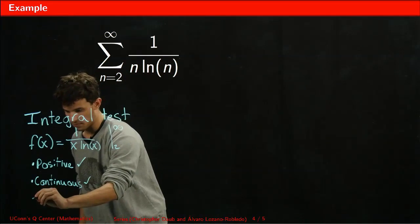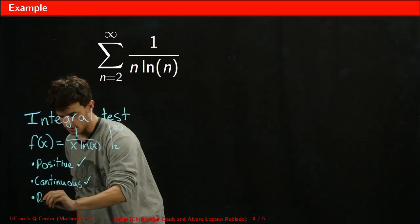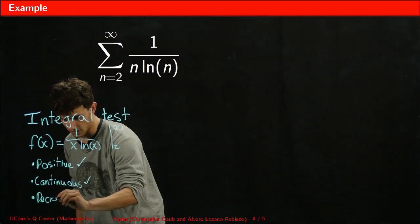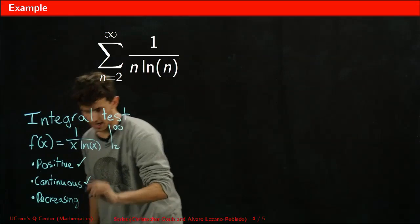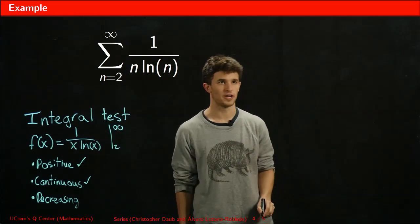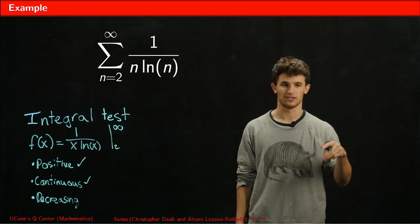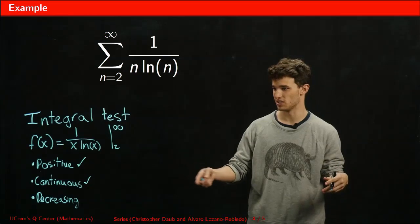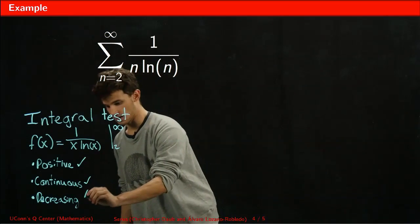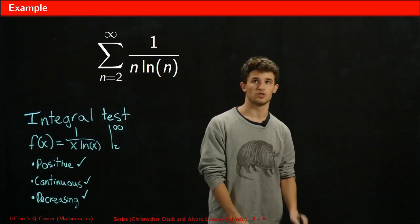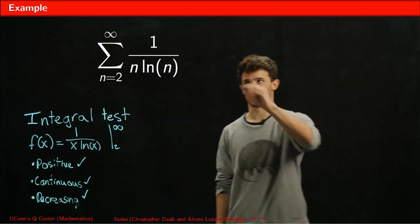And finally, decreasing. Our function 1 over x ln(x) has a quotient that is continuous and also increasing. Therefore, the overall function is decreasing. Now we move on to performing the actual integral.